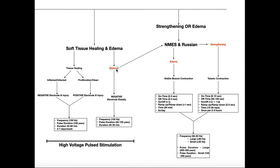If you're going to choose to treat edema with high-voltage pulse current, the negative electrode is actually going to go on the site of the edema or distal to that. The positive electrode is going to be proximal, and that will allow that fluid to move distally to proximally — to move it back to the heart. High-voltage pulse current for edema has these parameters: a frequency of 120 hertz, a pulse duration of 40 to 100 microseconds, and the duration is going to be 20 to 30 minutes. Refer back to the video on high-voltage pulsed current for these ranges.